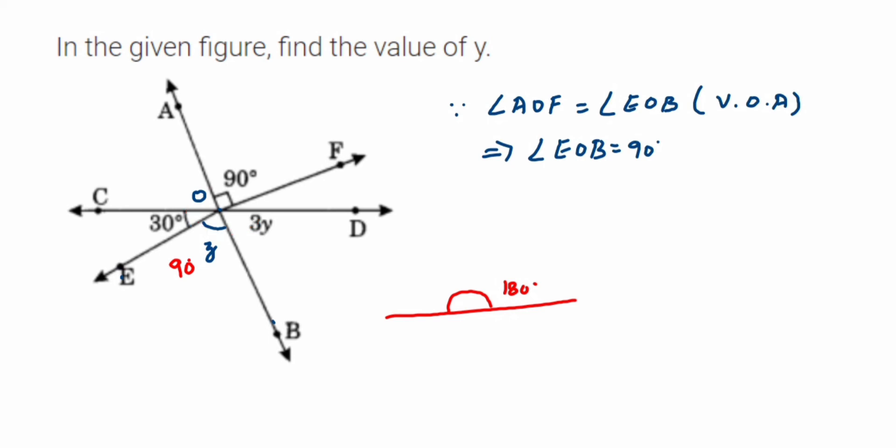We're gonna add up all these three angles, and that will be equal to 180 degrees. So from here we can say 30 degrees plus 90 degrees plus 3y will be equal to 180 degrees. We're gonna add the constants, so 30 plus 90 is 120.